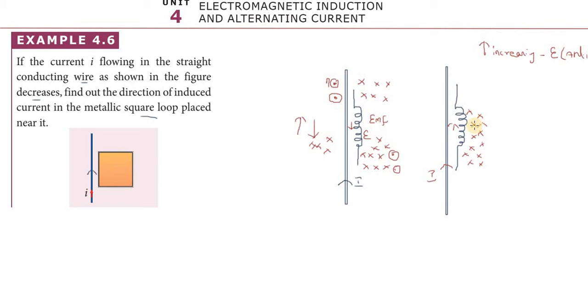So this is all for problem 4.6. When current is decreasing, the induced current is anti-clockwise. When increasing, it would be clockwise.